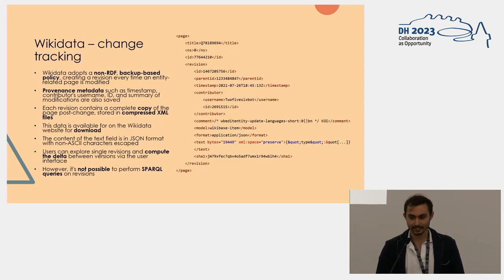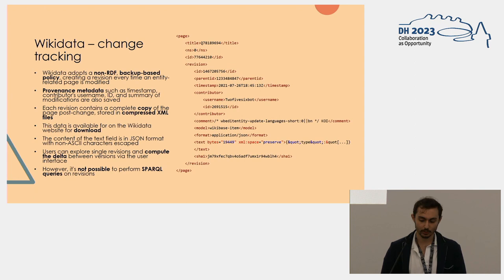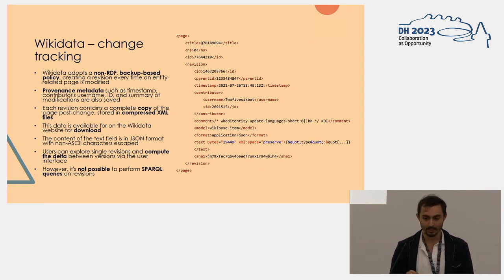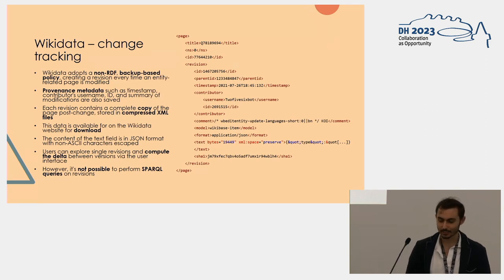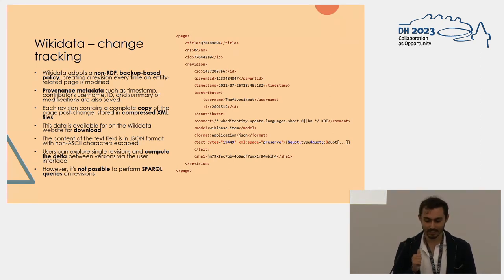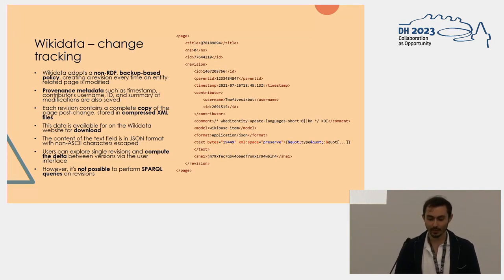Regarding change tracking, the problem is way more complicated, because even though this is so important for reliability, today most knowledge bases don't use RDF to do change tracking. Wikidata, Yago, the Dynamic Linked Data Observatory — they all do backups, so snapshots at various granularities: the page, the entity, the entire dataset. DBpedia also does backups for change tracking. The problem with this approach is that you have scalability issues, and you cannot do SPARQL queries on changes.